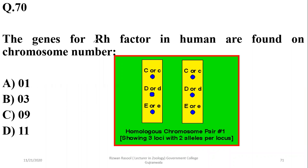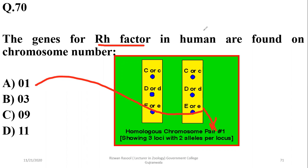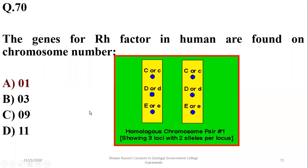The genes for the RH factor in humans are found in which chromosome? They are found in the first pair — chromosome number one. So the right option is A.